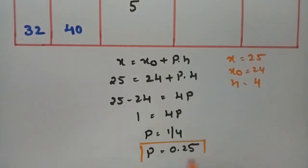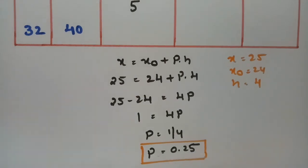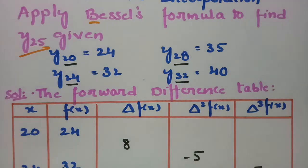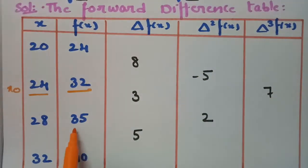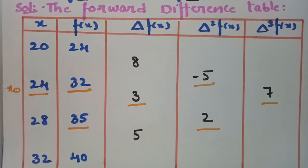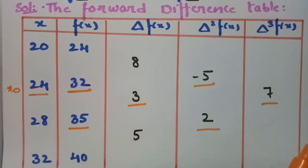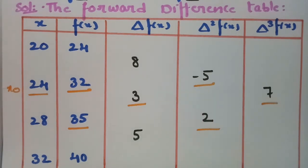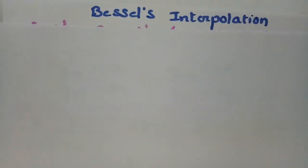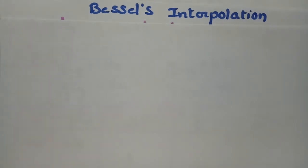For Bessel's formula, we select values in a double-single-double-single pattern — as opposed to Stirling's formula which uses a single-double-single-double pattern. After selecting all these values, we frame the Bessel's formula.